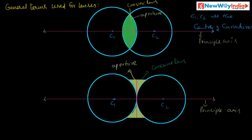Another important term is optical center. The optical center is a point within the lens where the aperture — that is, the diameter of the lens — and the principal axis meet. This point O is called the optical center, and this applies to both convex and concave lenses.